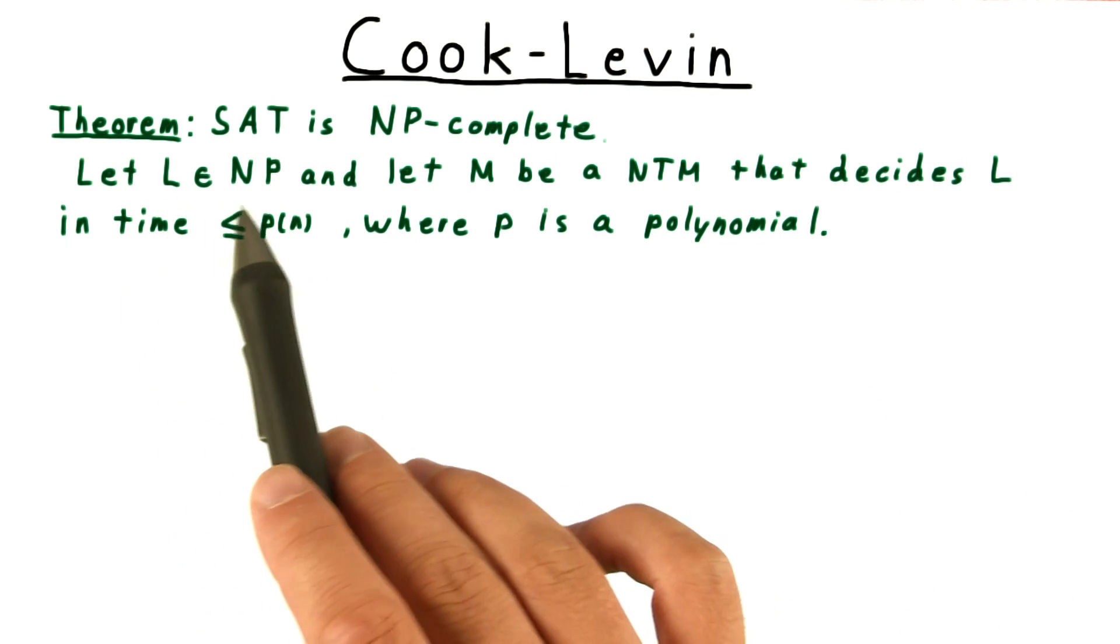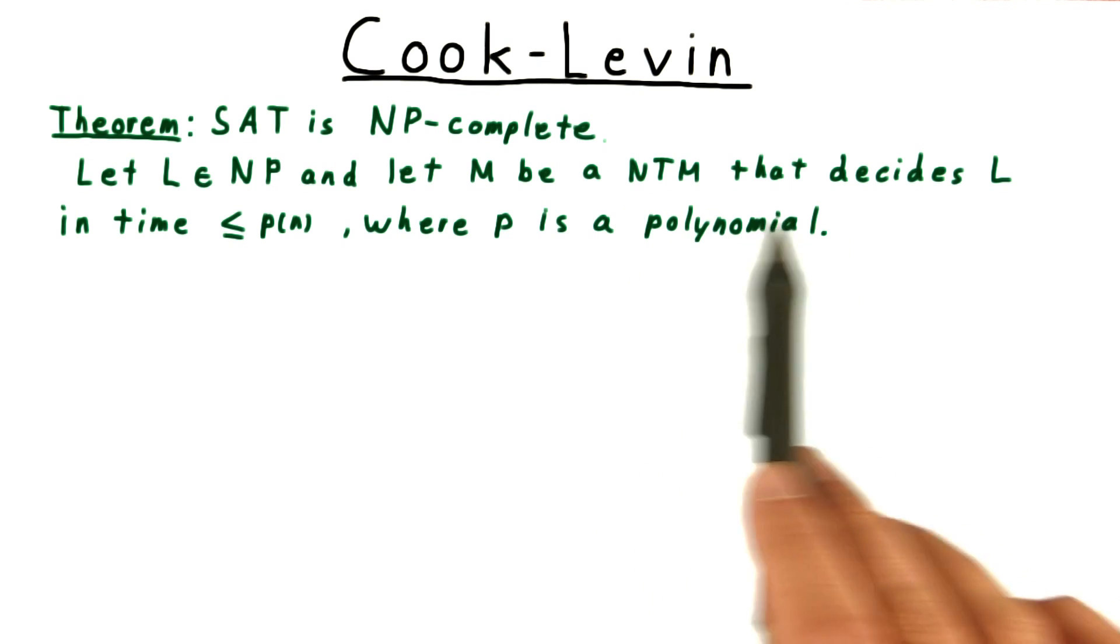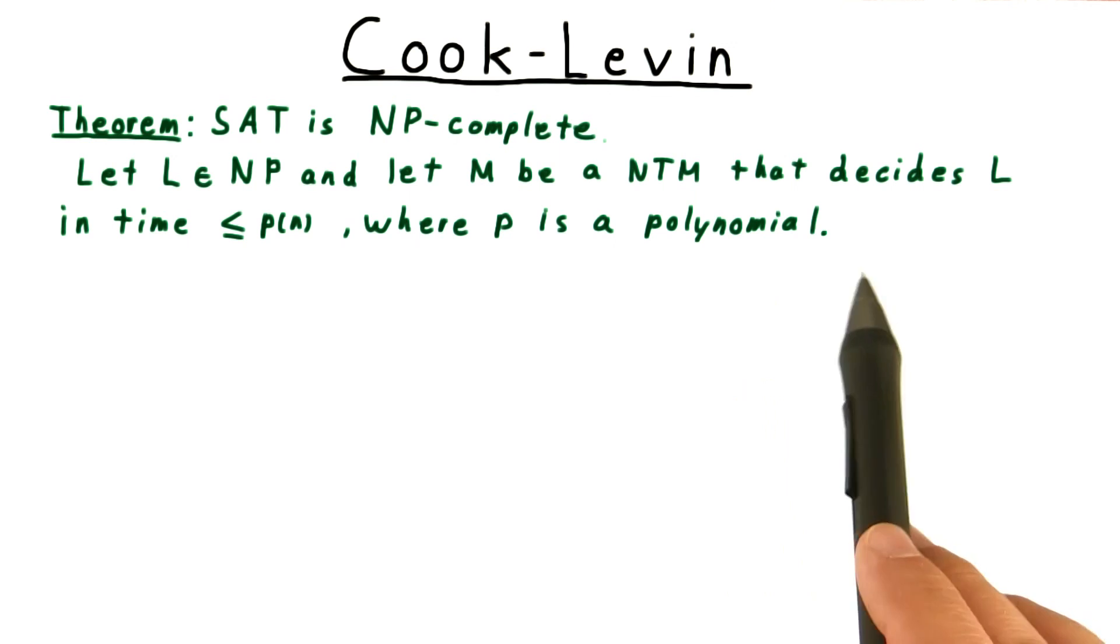Therefore, let L be an arbitrary language in NP and let M be a non-deterministic Turing machine that decides L in time at most P(N), where P is a polynomial.